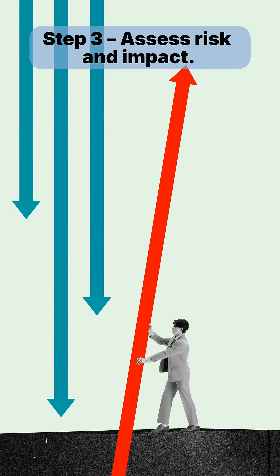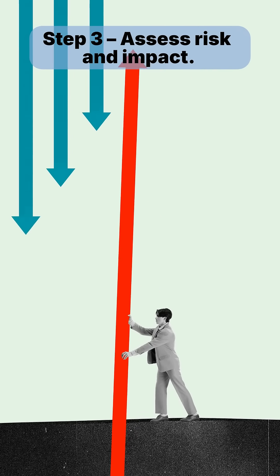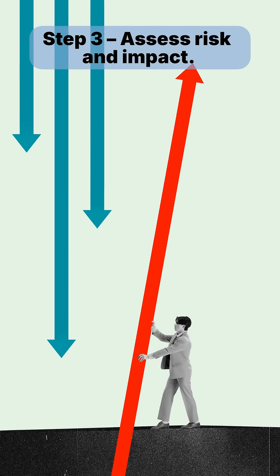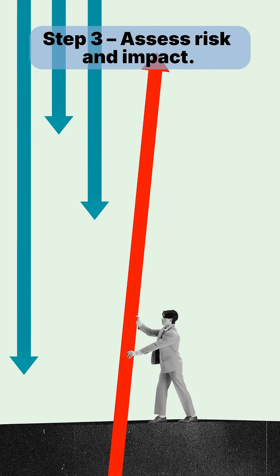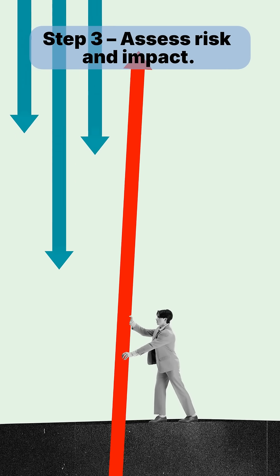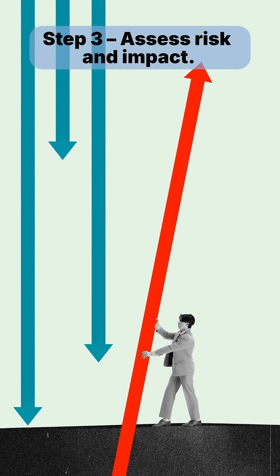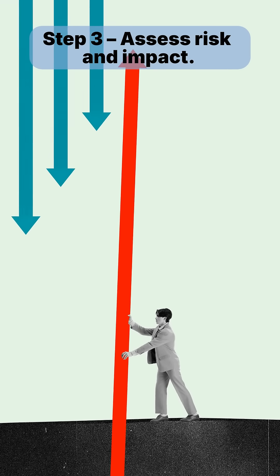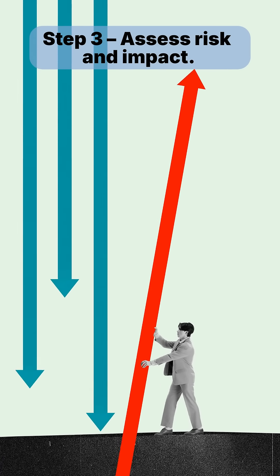Step 3: Assess risk and impact. Before you go live, ask yourself: what could go wrong? How many people or systems could be affected? If you skip this step, every change becomes a gamble.